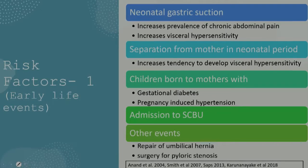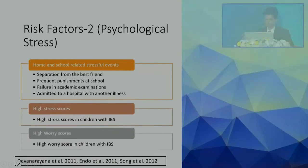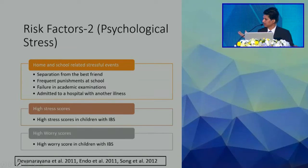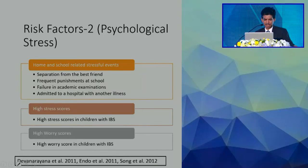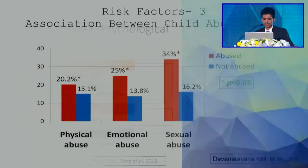Admission to special care baby units is also a predisposing factor — neonates admitted to intensive care are subjected to many invasive procedures which heighten visceral sensitivity. Other early events such as umbilical hernia repair surgery or surgery for pyloric stenosis also predispose children to develop functional abdominal pain disorders later in life. From our own findings, separation from a best friend, frequent punishment in school, failure in academic examination, and hospital admission are also predisposing psychological factors.